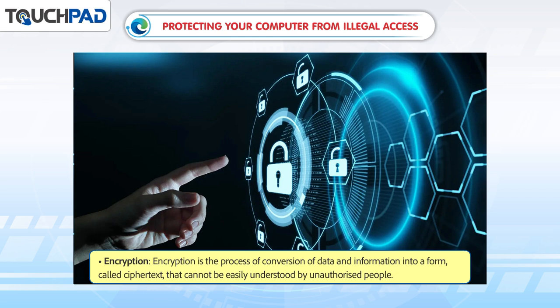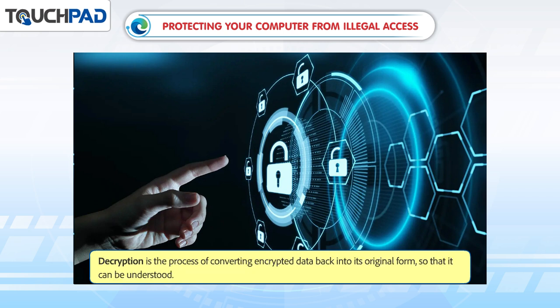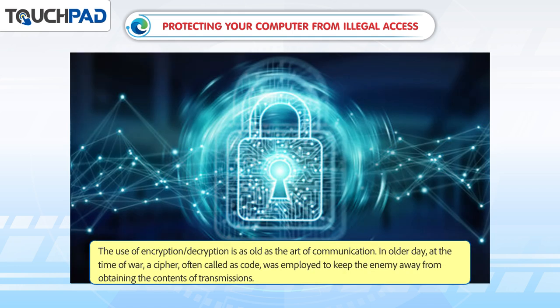Encryption is the process of conversion of data and information into a form called ciphertext that cannot be easily understood by unauthorized people. Decryption is the process of converting encrypted data back into its original form so that it can be understood. The use of encryption and decryption is as old as the art of communication. In older days, at the time of war, a cipher, often called a code, was employed to keep the enemy from obtaining the contents of transmissions.